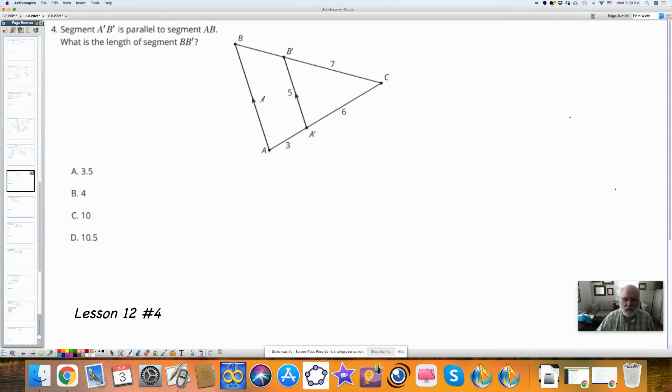The lines are parallel. They'll divide this into proportional parts. So if I call BB prime X, I have X is to 3 as 7 is to 6. Cross multiply, I get 6X is equal to 21. Divide both sides by 6. X is equal to 21 over 6.